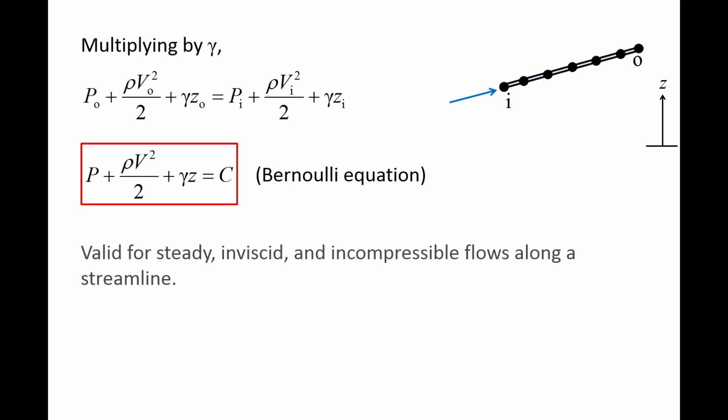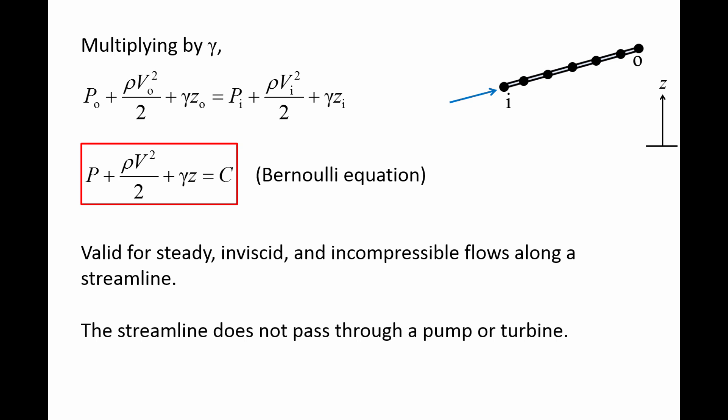It is important to remember the conditions that must be met in order to use the Bernoulli equation. The flow must be steady, inviscid (which means viscous effects are negligible), and incompressible (which means the density does not change significantly). It can only be applied along a streamline, and the streamline cannot pass through a pump or turbine.